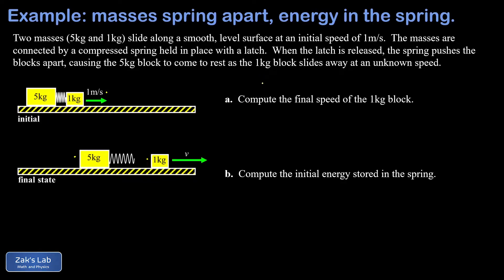So we write p initial equals p final. Our initial momentum is given by the total mass of these two blocks that are moving at the same speed of one meter per second, so that's six kilograms times one meter per second.